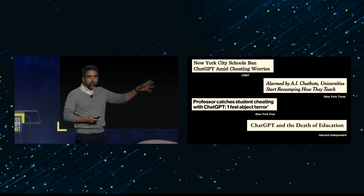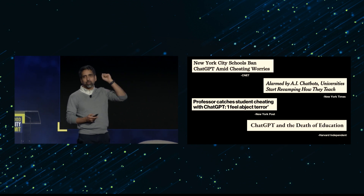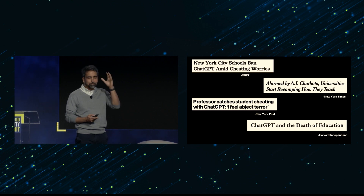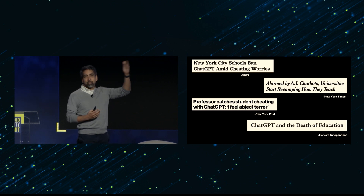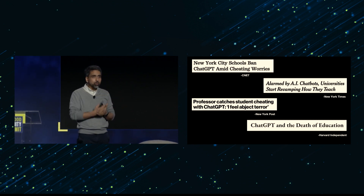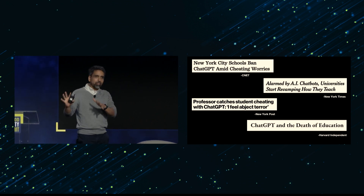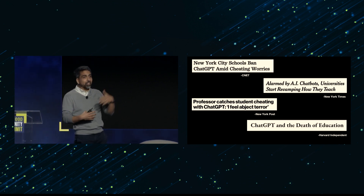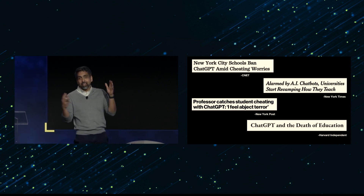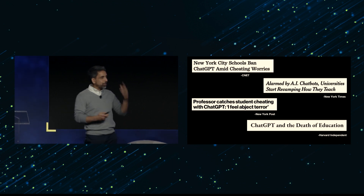ChatGPT came out in 2022 — all this uproar about cheating, et cetera. I was pretty bummed. We were under an NDA at the time with OpenAI, working with what would eventually become GPT-4. In a lot of ways this was a blessing. About four months later, in March 2023, when we were able to launch Khanmigo, the education system kind of said, hey, we shouldn't just ignore this stuff — if only someone created it with the right guardrails, got rid of some of the math errors, the hallucinations, and safety measures. So that's what I'll show you now.